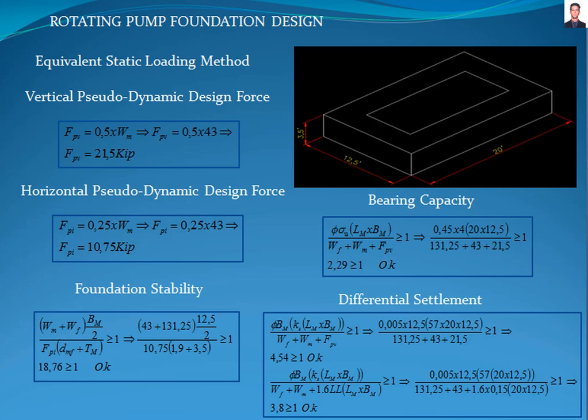The next step is to verify the dimensions of the foundation based on the soil bearing capacity, settlement and foundation stability, through the equivalent static load method in accordance with section 7.1.2.2 of the American Concrete Institute 351.3R standard. When the dynamic forces are not provided by the vendor, these dynamic forces can be taken as 50% of the weight of the machine as vertical force, and 25% of the weight of the machine as lateral force. The vertical pseudo-dynamic force is 21.5 kilopounds, and the horizontal pseudo-dynamic force is 10.75 kilopounds.